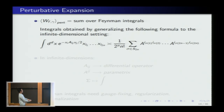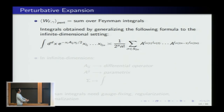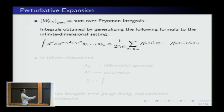The perturbative expansion is a sum over Feynman integrals obtained by generalizing Wick's theorem — a finite-dimensional result that tells you how to integrate polynomials against Gaussian measures. Now A is a matrix (a non-degenerate matrix), you plug in A-inverse (indices upstairs), and do all possible contractions — sum over the symmetric group with a symmetry factor.